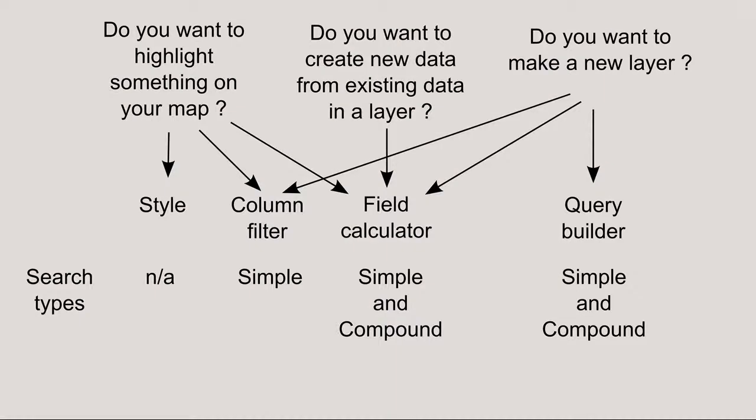Once you've created shapefiles, you can change their appearance, change their content, and create new data and new layers. You can change the style to show differences, and you can search within an attribute table to highlight mapped objects. Searches can be simple, involving a single column, or compound searches where values in several columns are searched. Both numeric data and text strings, or a combination of both, can be searched.